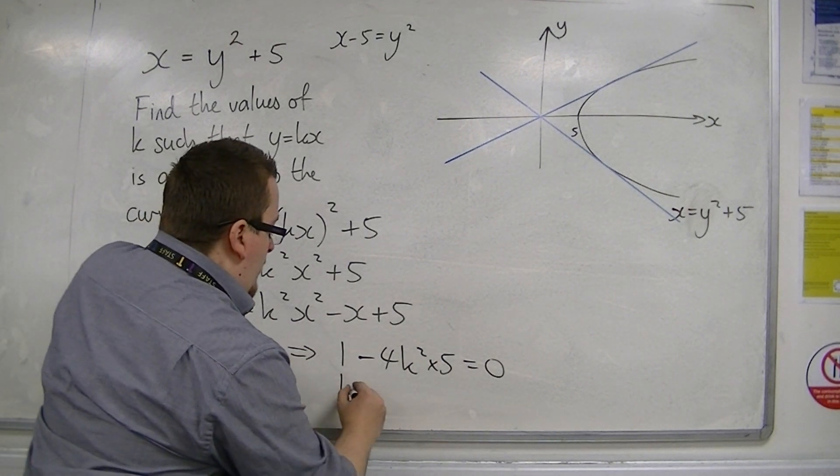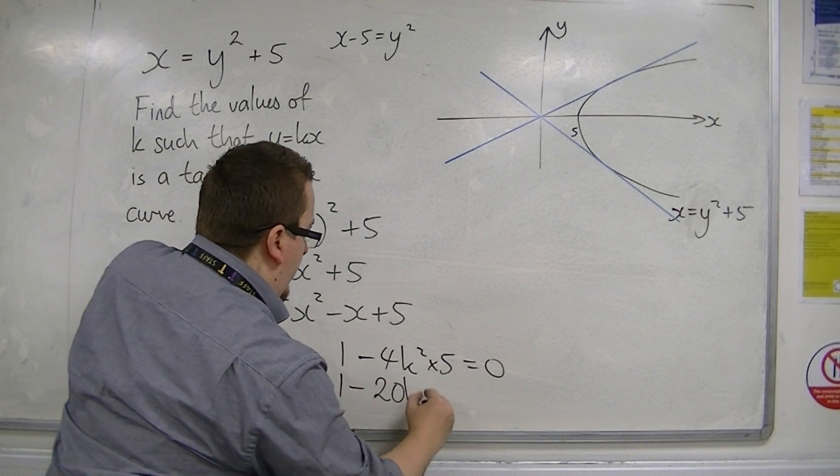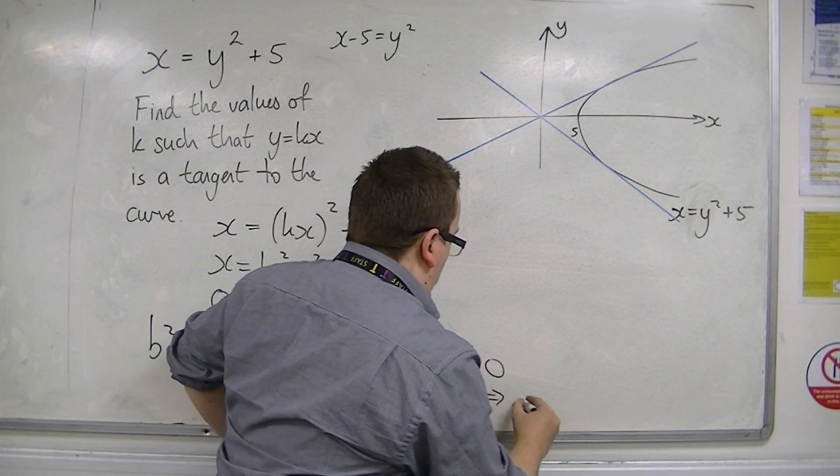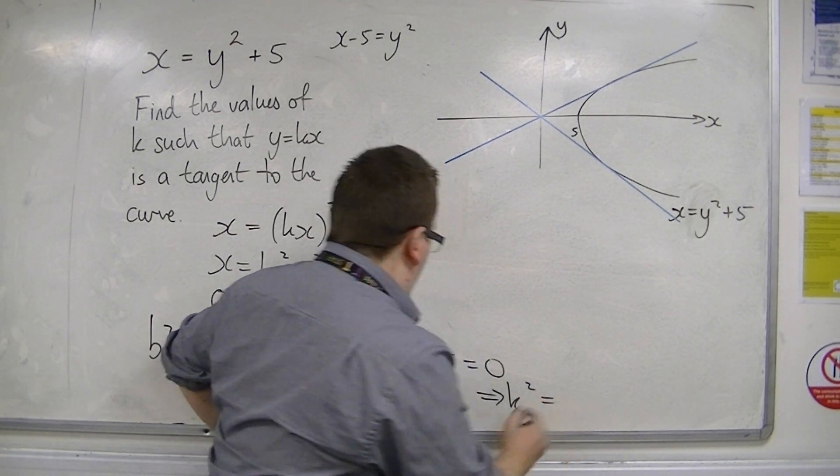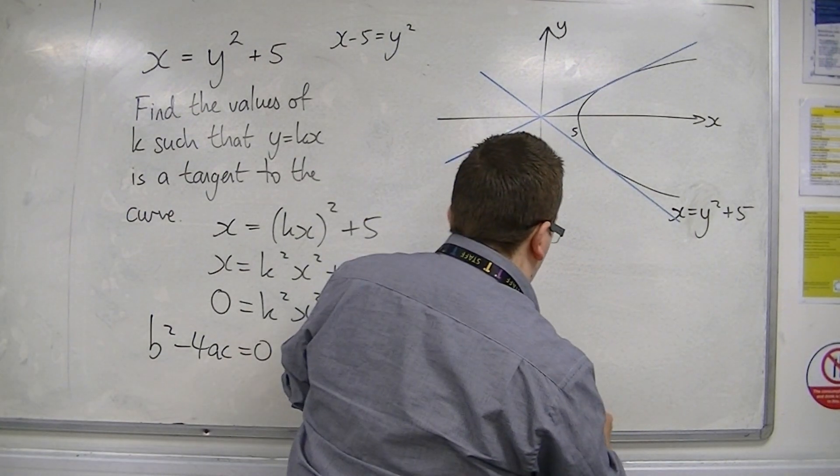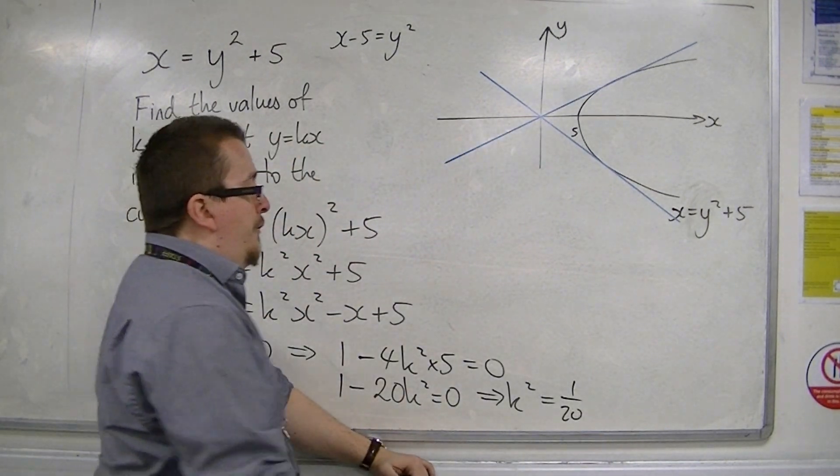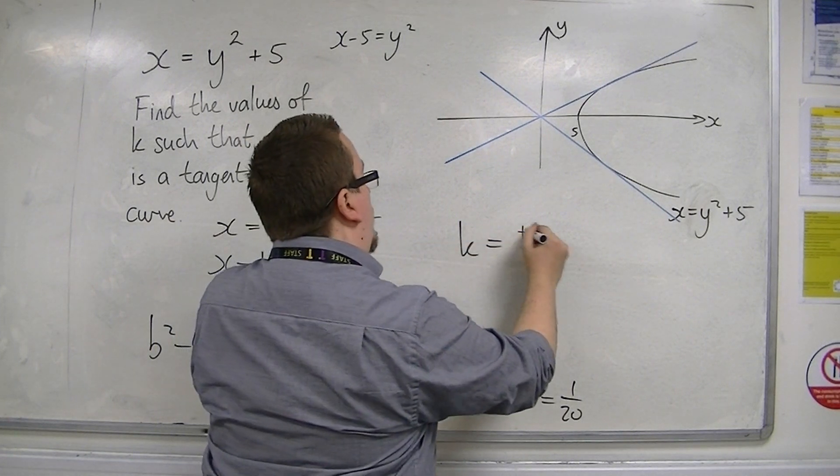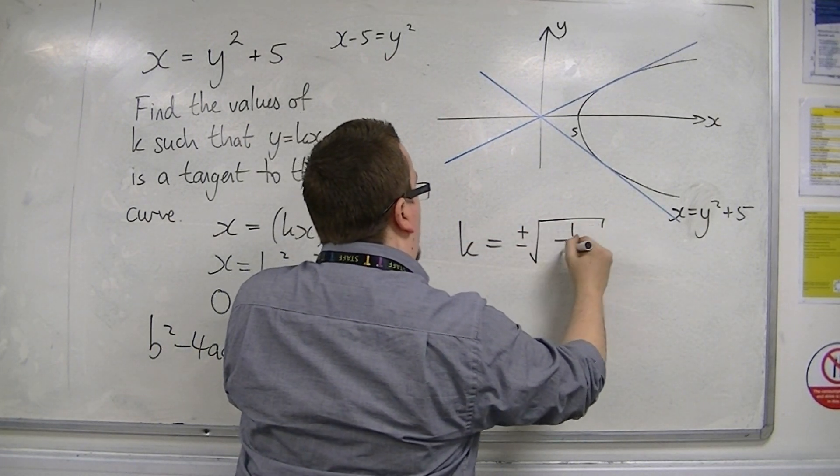So that means 1 take away 20k squared is 0. So if I reorganise this, that means that k squared is 1 over 20. So if k squared is 1 over 20, then k is equal to plus or minus the square root of 1 over 20.